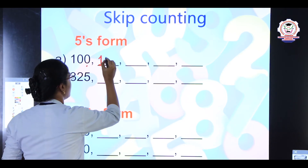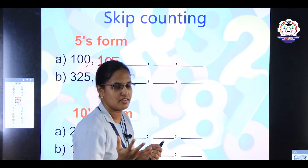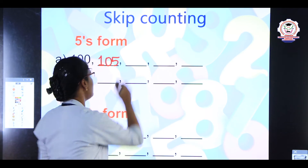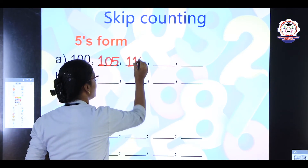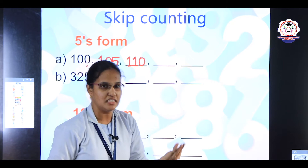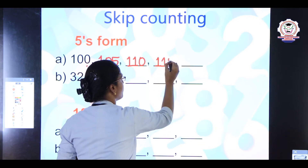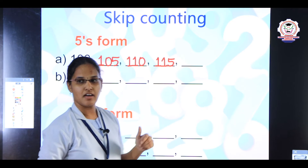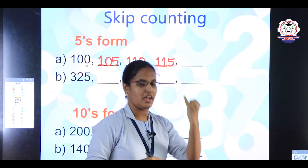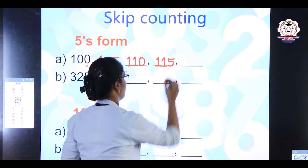The answer is 105. Now again you have to count by 5: 106, 107, 108, 109, then 110. The answer is 110. Again skip count by 5: 111, 112, 113, 114, 115. The answer is 115. And at last, again count by 5 after 115: 116, 117, 118, 119, 120. Very good.